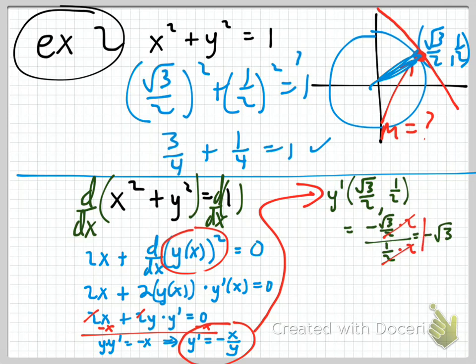So negative radical 3 is the slope of the tangent line to this circle at that point. I'm right at the 15-minute mark, so I'm going to sign off. See you in the next video.